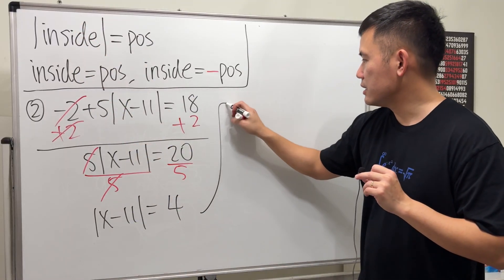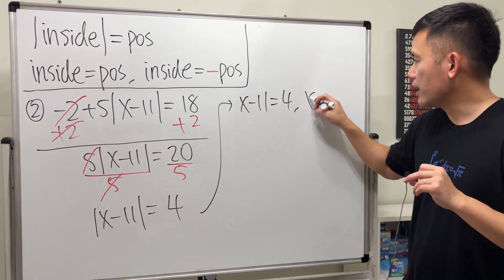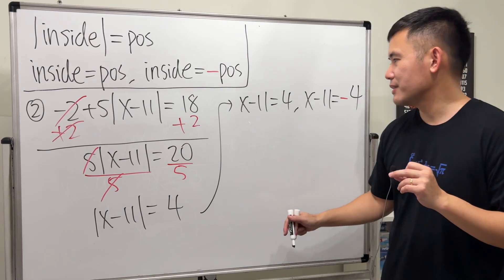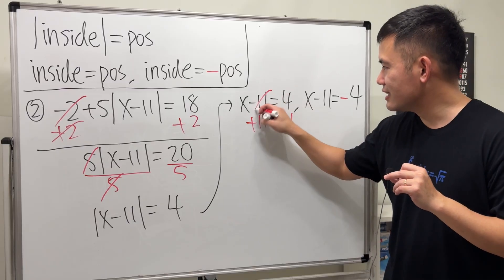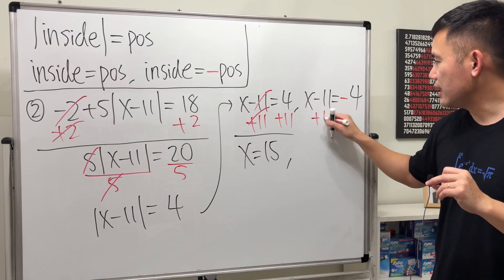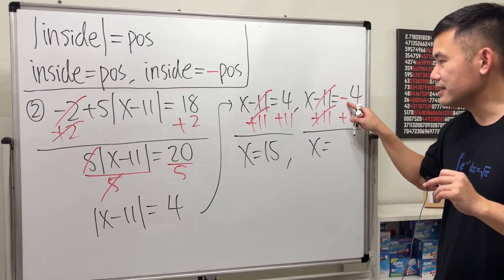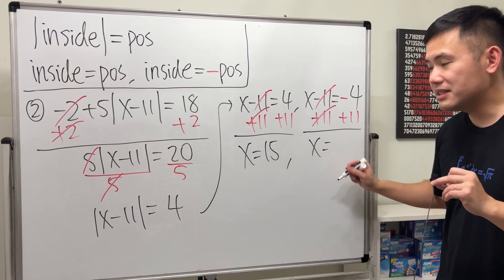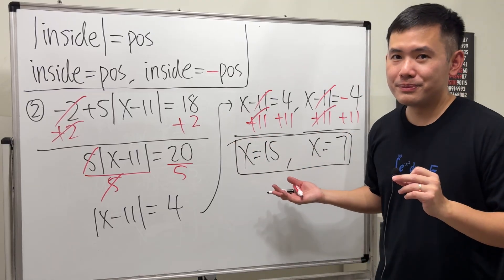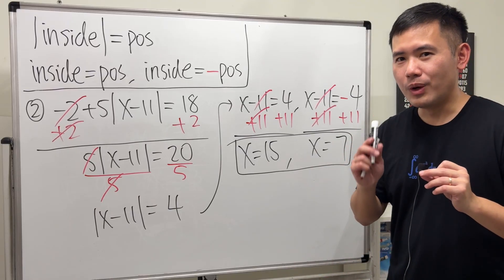Now we're in the correct form. First equation: x minus 11 equals 4, so x equals 15. Second equation: x minus 11 equals negative 4, so add 11 to both sides and x equals 7. Both answers are positive here — that is definitely possible, so keep that in mind.